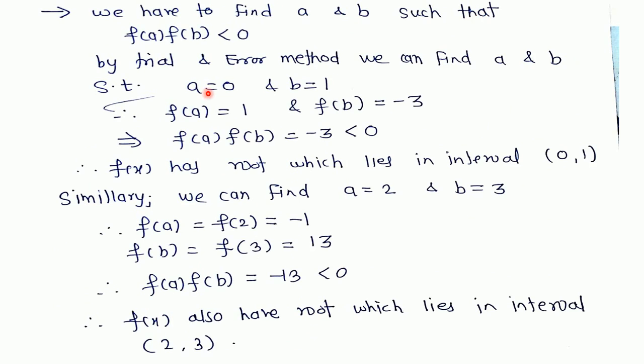We have to find the value of a and b such that f(a) × f(b) < 0. We have to find a and b by trial and error method.